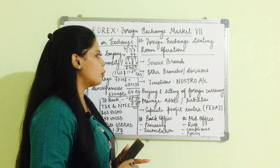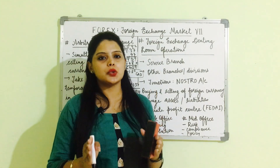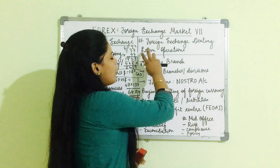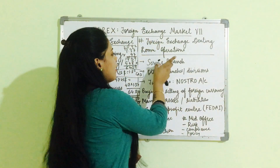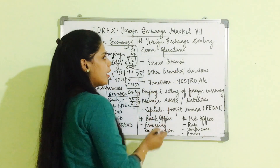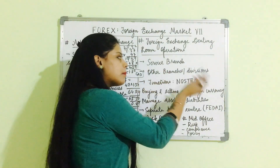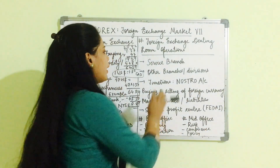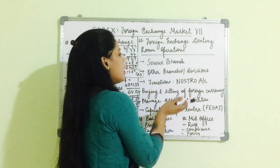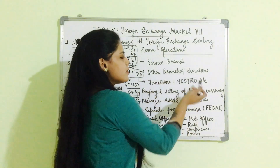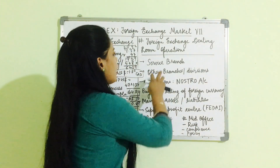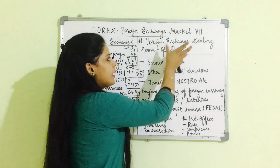The next topic is foreign exchange dealing room operations. If there is an institution or a bank, there is a separate service branch which offers foreign exchange transactions. This single service branch looks after the operations of all other branches and divisions for foreign exchange transactions. So in any institution like a bank, there is a service branch — that is the foreign exchange dealing room.